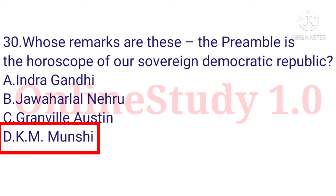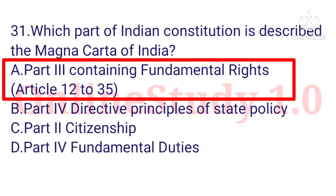Question number 29: The ideals of liberty, equality and fraternity as enshrined in the preamble to the Constitution of India have been taken from option A: the French Revolution of 1789. Question number 30: Whose remarks are these — 'The preamble is the horoscope of our sovereign democratic republic'? The answer is option D: K.M. Munshi. Question number 31: Which part of the Indian Constitution has been described as the Magna Carta of India? The answer is option A: Part 3, containing fundamental rights.